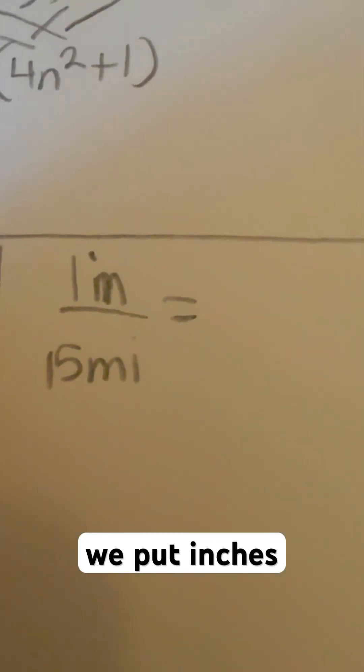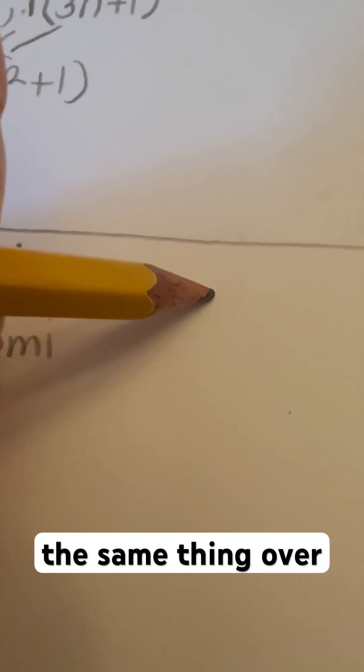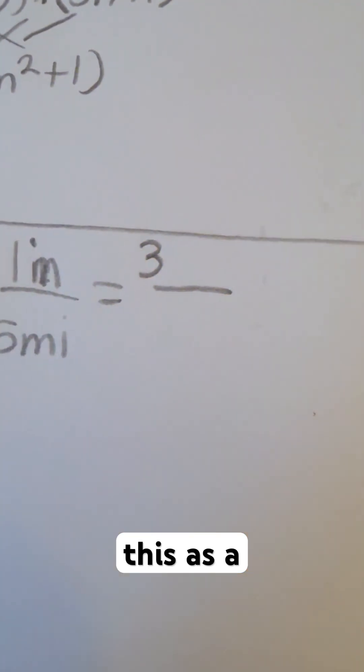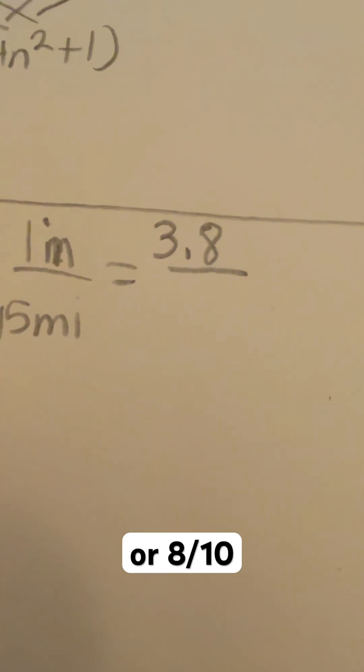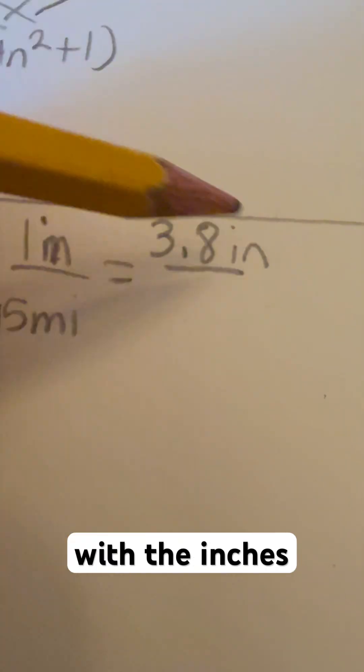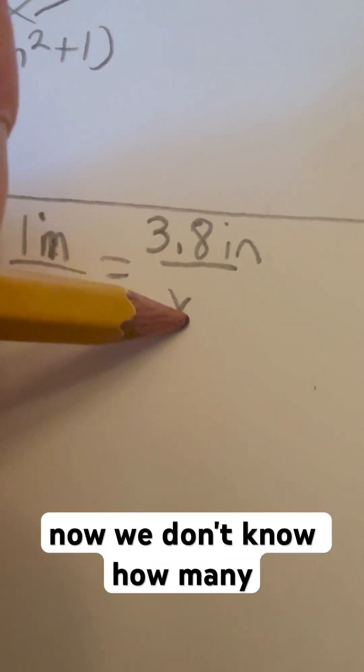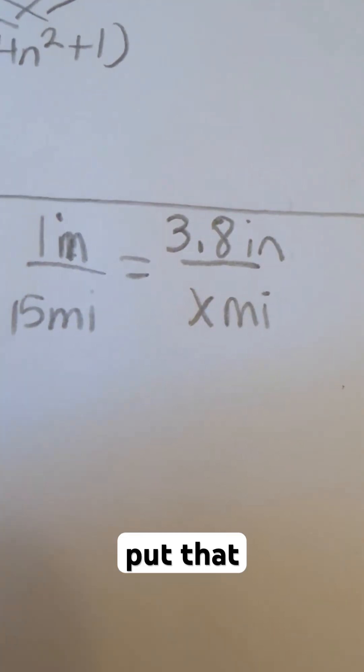Since we put inches on a numerator up here we're going to do the same thing over here. Now we're going to rewrite this as a decimal. Four fifths is a nice easy decimal, 0.8 or 8 tenths. We're going to keep the inches with the inches and then we're going to put the miles with the miles. We don't know how many miles yet so we're going to just put that.